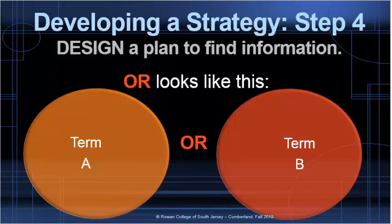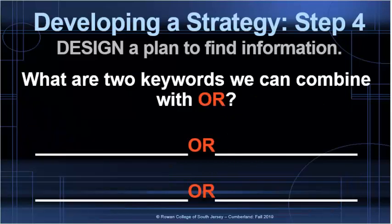So what keywords can we combine with OR? We can look at bullying OR cyberbullying, or sexual harassment OR workplace bullying. A good way to think about this is that we want to combine synonyms or words that are close to one another when using OR. So we're saying: give me back results with either bullying or cyberbullying, or give me back results that have either sexual harassment or workplace bullying. Every result is not going to contain both of the terms, but you will get a list of results that have one or the other.